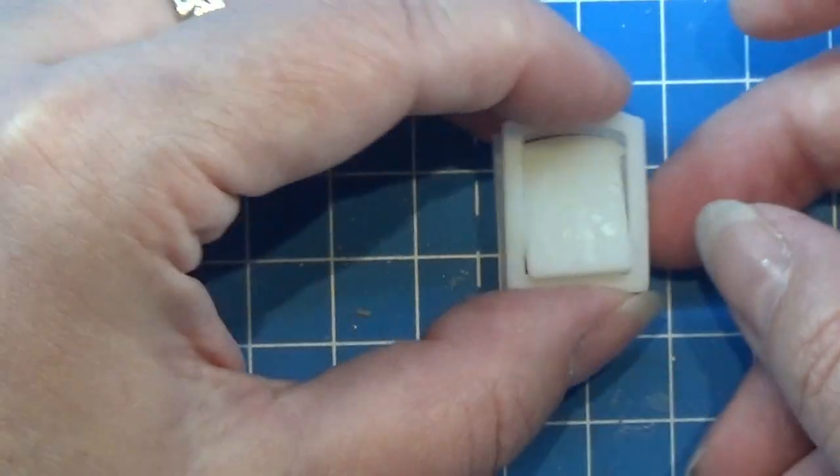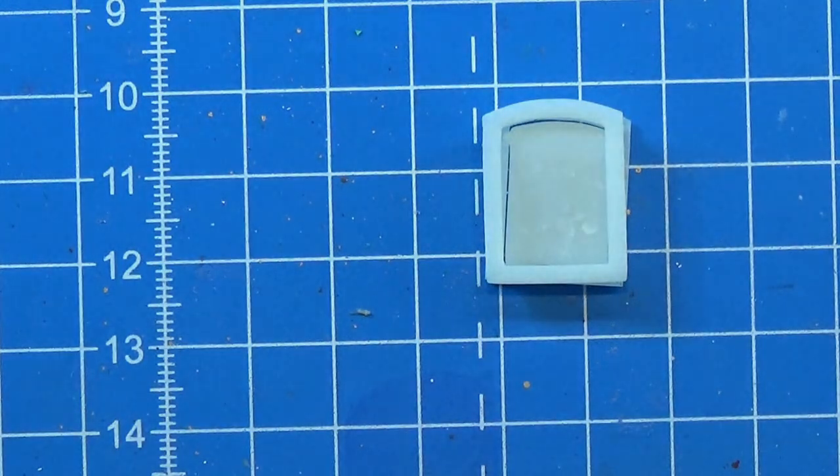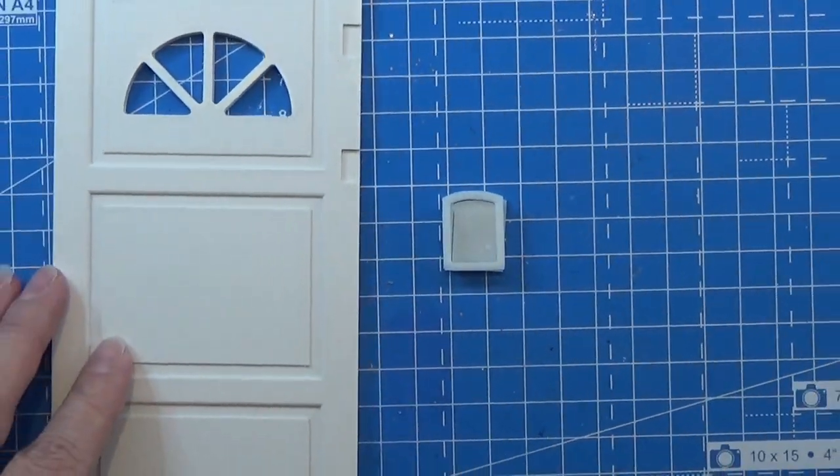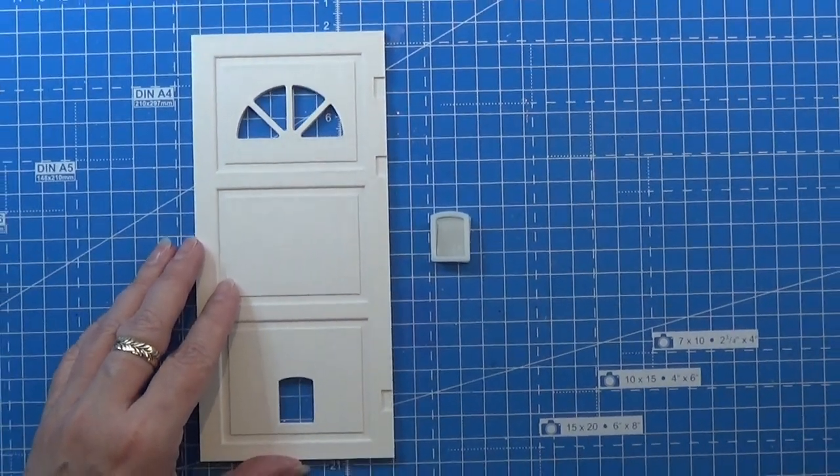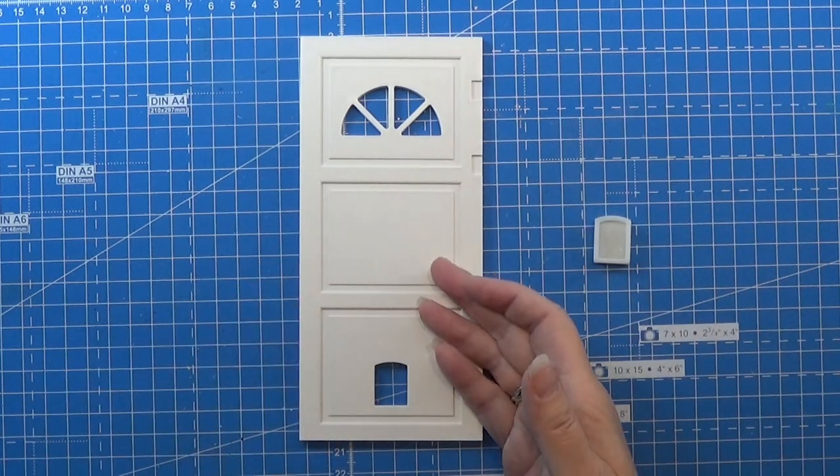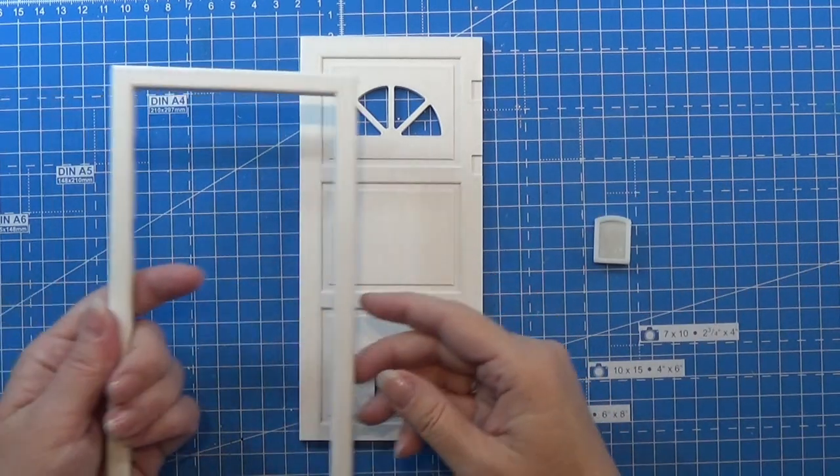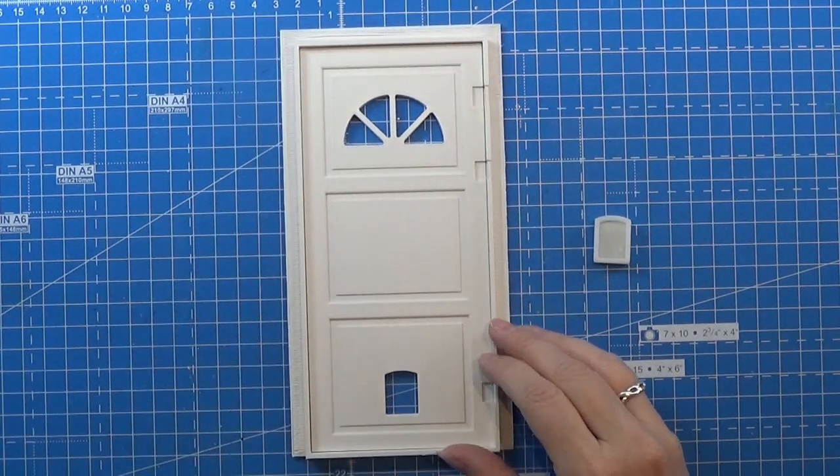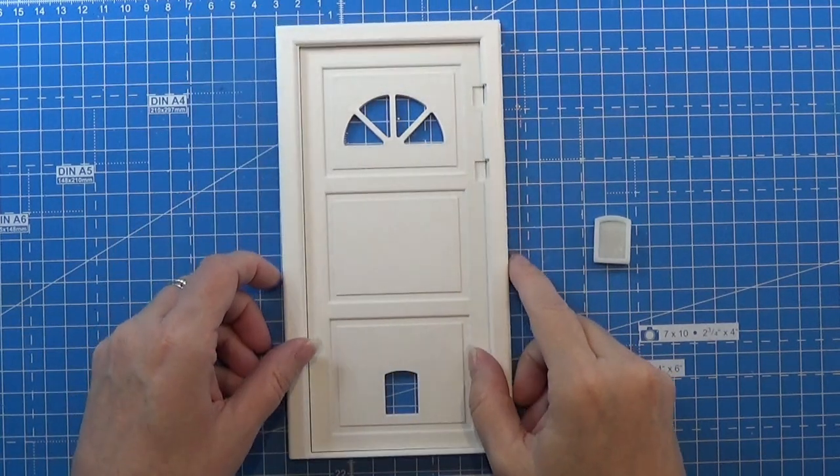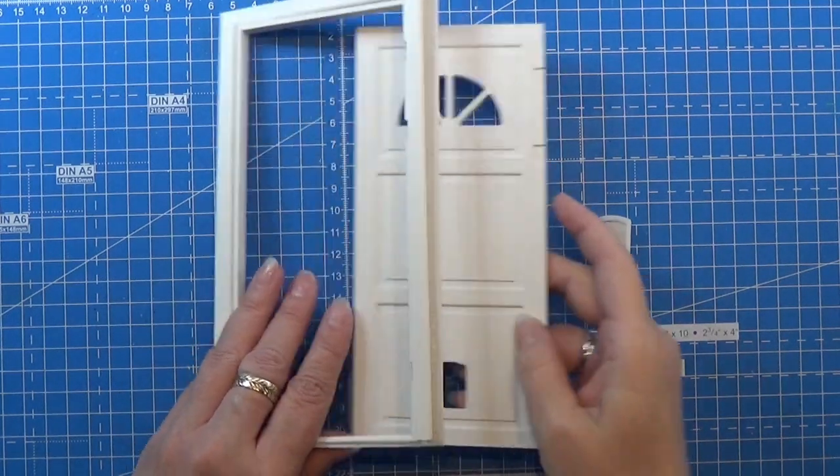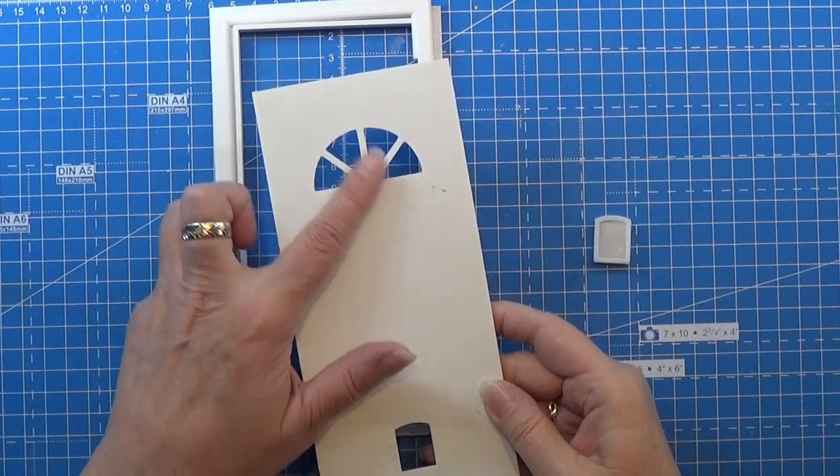I made the STL file on Fusion 360 and used the original measurements from my cat door for this one. Here is where everything went wrong, because if you have a cat door you need a door to place it in, and the door needs a door frame. So I made that all here—you see the door and the two parts for the door frame.